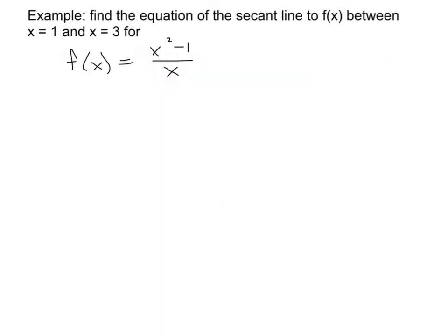So now I have another example. Find the equation for the secant line to f of x between x equals 1 and x equals 3 for this function f of x equals x squared minus 1 over x. I think that you guys should be able to follow the example we just did and do this one on your own, so please pause the video and do that.